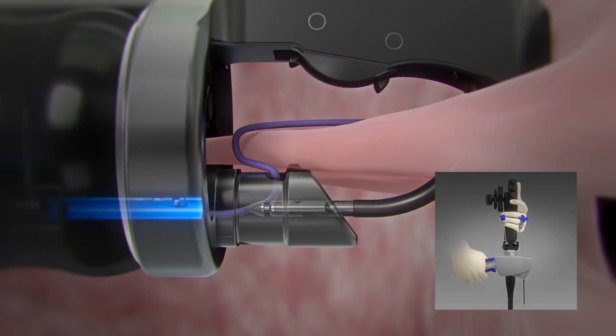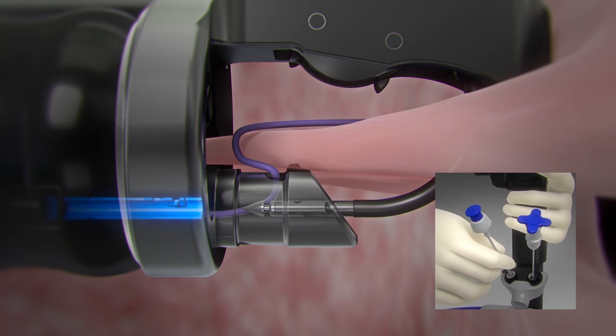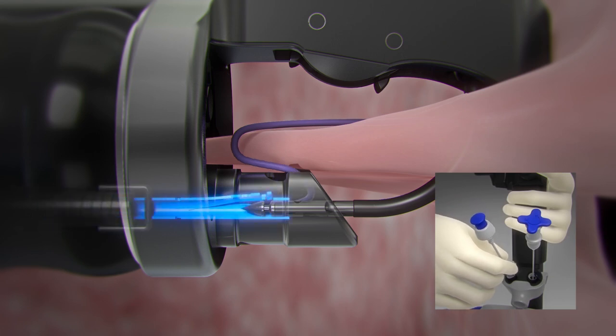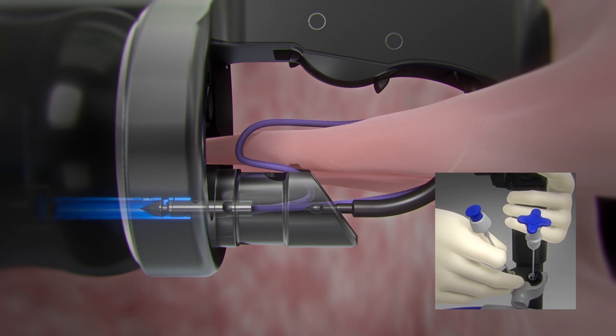Close the needle driver handle to pass the anchor and suture through tissue. Advance the anchor exchange catheter over the anchor until the locking mechanism engages. Without pressing the blue button, pull the anchor exchange catheter back to disengage the anchor from the needle body.